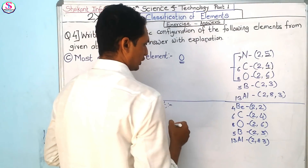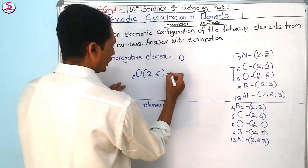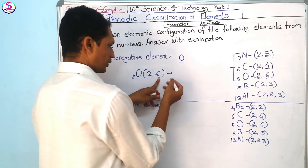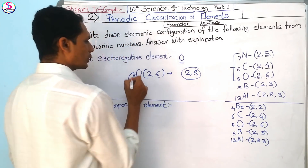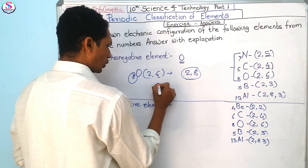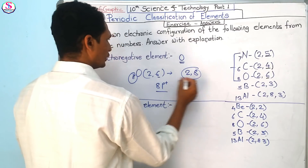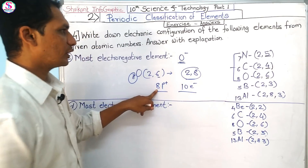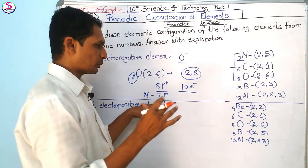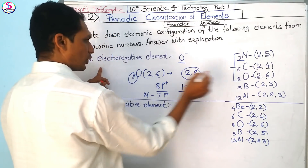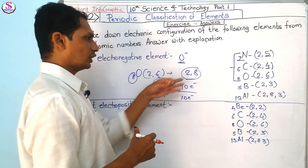Why oxygen and not nitrogen? Oxygen (atomic number 8) has configuration 2, 6 — it accepts 2 electrons to become stable with 10 electrons. It has 8 protons providing nuclear effective power to control those 10 electrons. Nitrogen has only 7 protons — not enough power to control 10 electrons — so oxygen is the most electronegative.